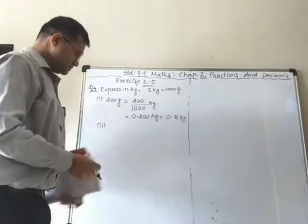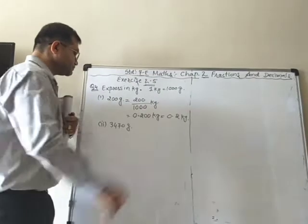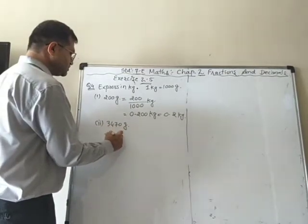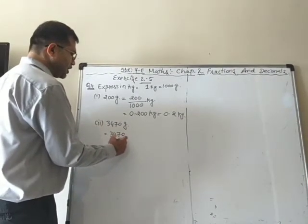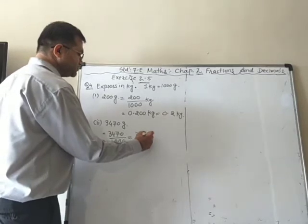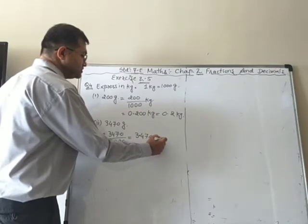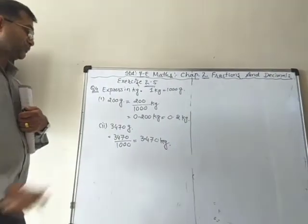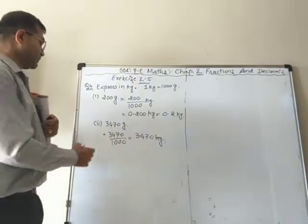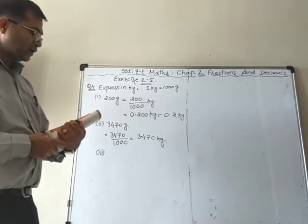Second one is 3470 grams. We divide by 1000: 3470 upon 1000. Don't cancel the zero — keeping 3 decimal places gives 3.470 kilogram. If you want, you can separate it as 3 kilograms and 470 grams.